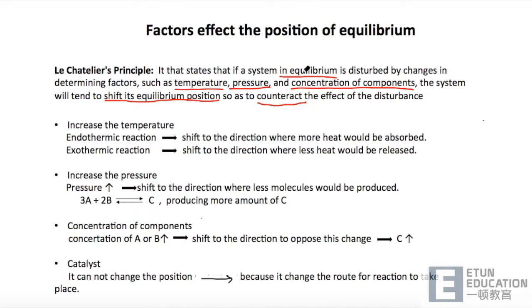也就是说当一个化学反应处于平衡位置的时候,如果有外界的一些determining factors,比如说温度,pressure,或者是concentration of components改变了,那这个system,这个化学反应就会shift its equilibrium position去抗衡外界这些改变。